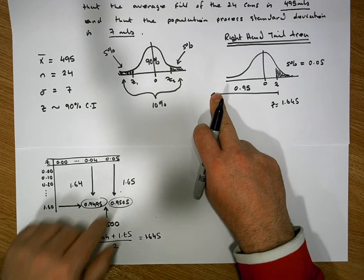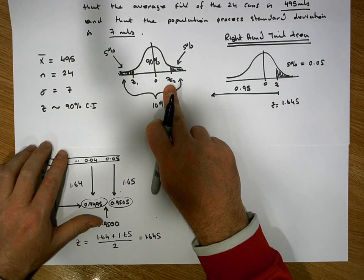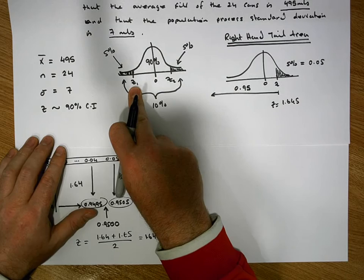Which means it has 5% of the area to the right-hand side. So this z-score here now is 1.645 and this one over here through symmetry is minus 1.645.